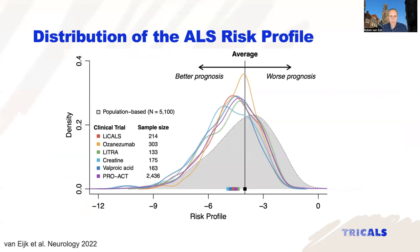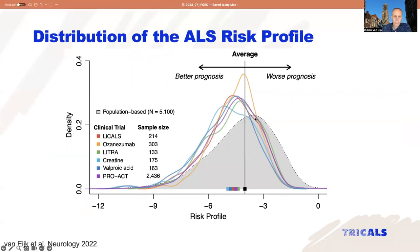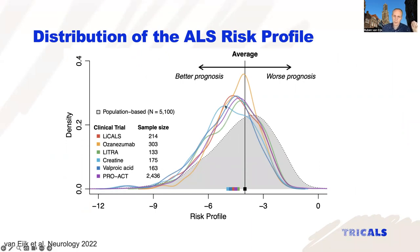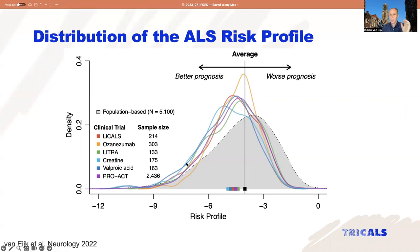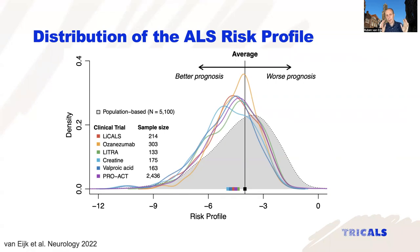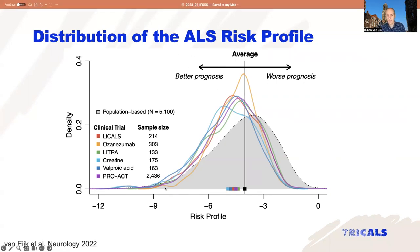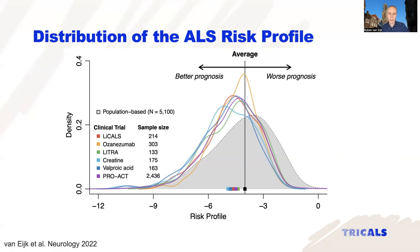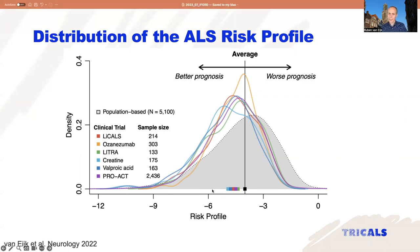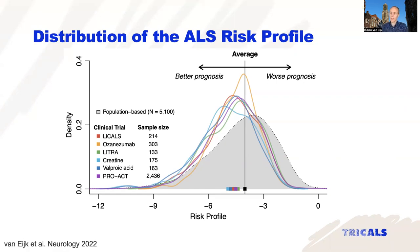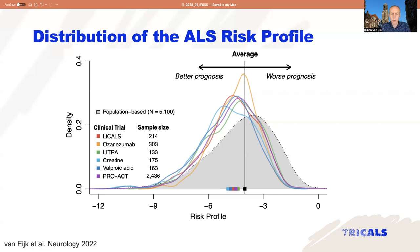In an actual clinical trial application, we get results similar to a histogram. The population-based cohort is shown in gray — the actual distribution of this risk profile among all patients. The distribution in different clinical trials shows a clear shift to the left, meaning patients with a better prognosis are over-represented in clinical trials. If we think back about the aims of our inclusion criteria — we want to remove slow-progressing patients because we cannot measure treatment effects — we are actually doing the reverse. We are over-representing these patients.